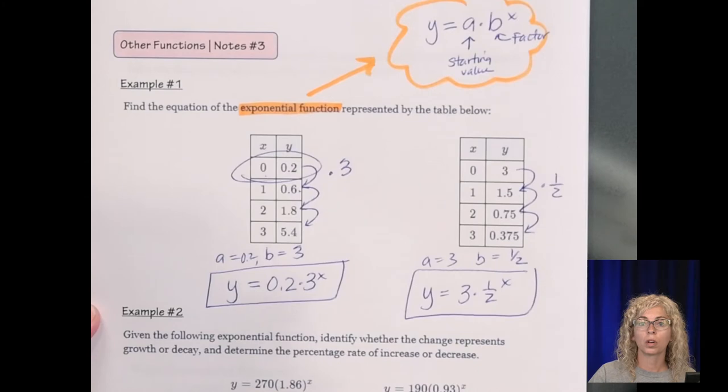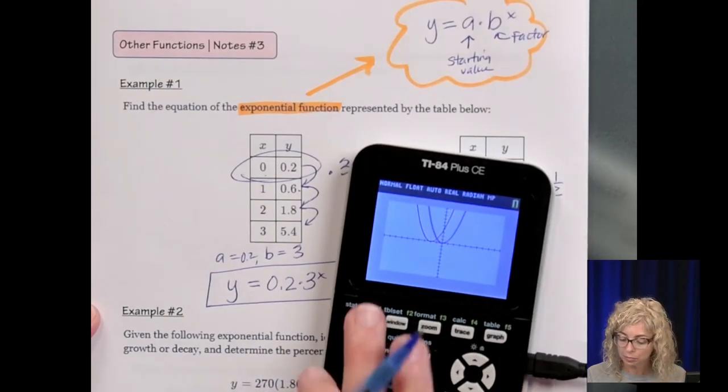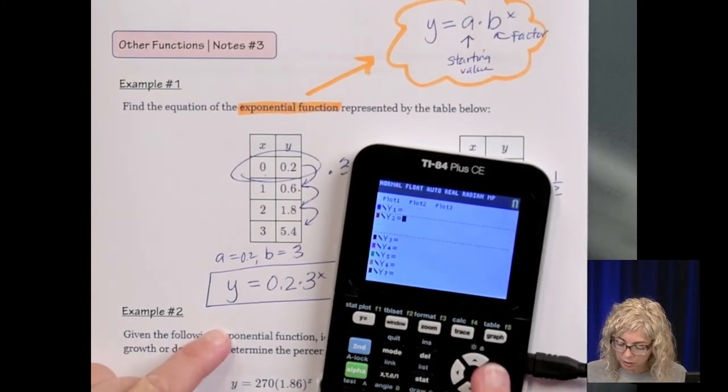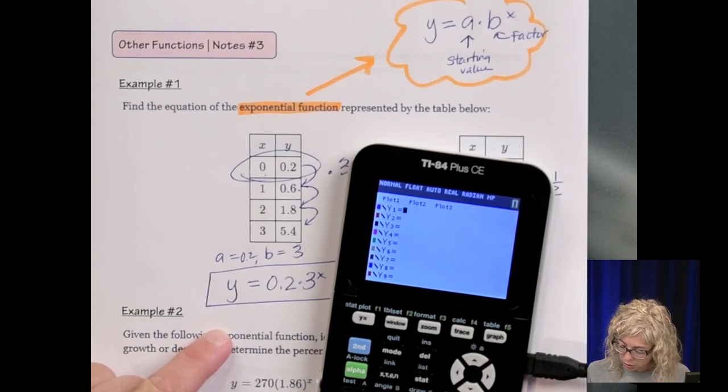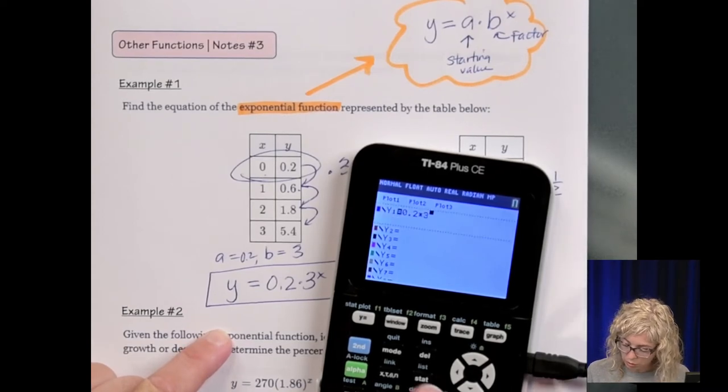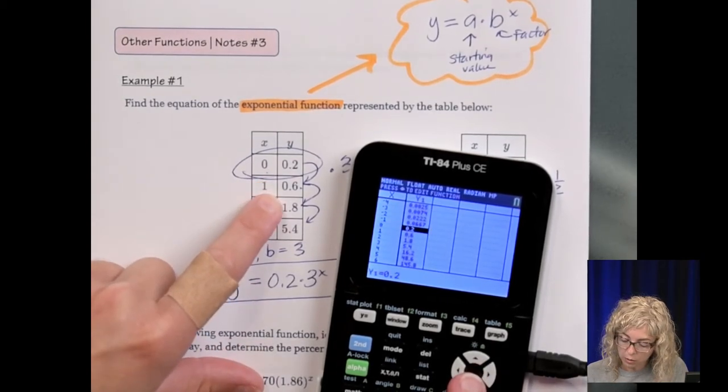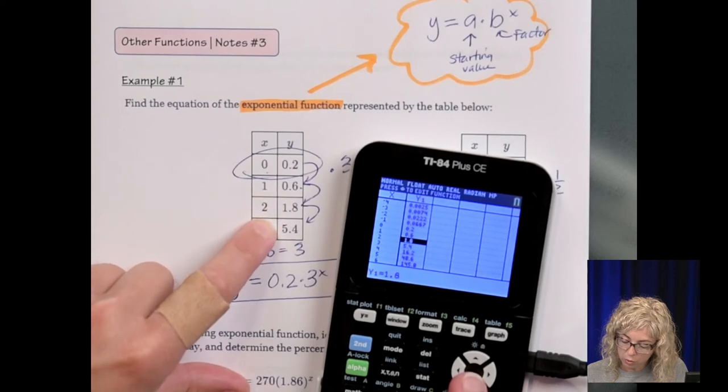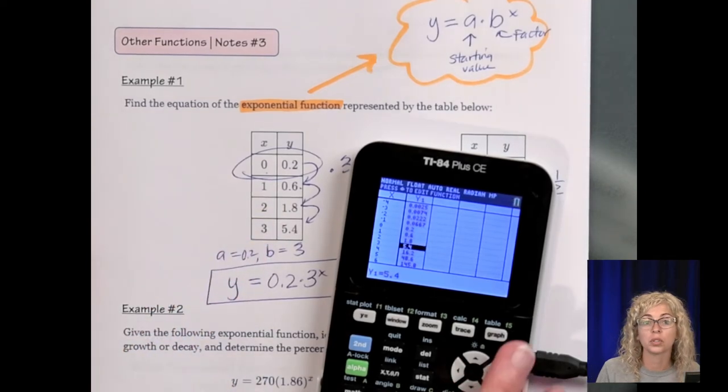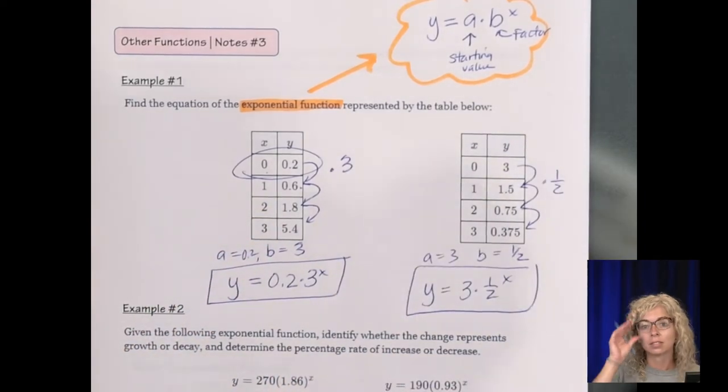And let's just pick one of them, the one on the left. Type it into our calculator to make sure we have it right. So 0.2 times 3 to the X table. We can see the 0, 0.2, 1, 0.6, 2, 1.8, and 3, 5.4. So we're right.